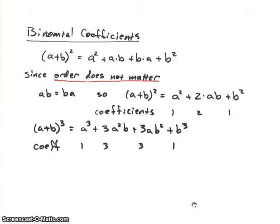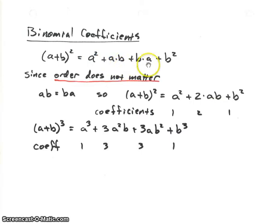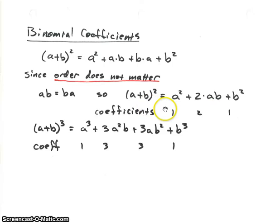Now let's look at binomial coefficients. You've probably done some of this in an algebra class. If we look at squaring the expression A plus B, we know that when we multiply those out, we get A squared, then A times B, then B times A, and then B squared. In algebra, order doesn't matter, so A times B is the same as B times A. Therefore, those two middle terms combine to give 2AB. Looking at the coefficients of this polynomial, we have 1, 2, and 1.